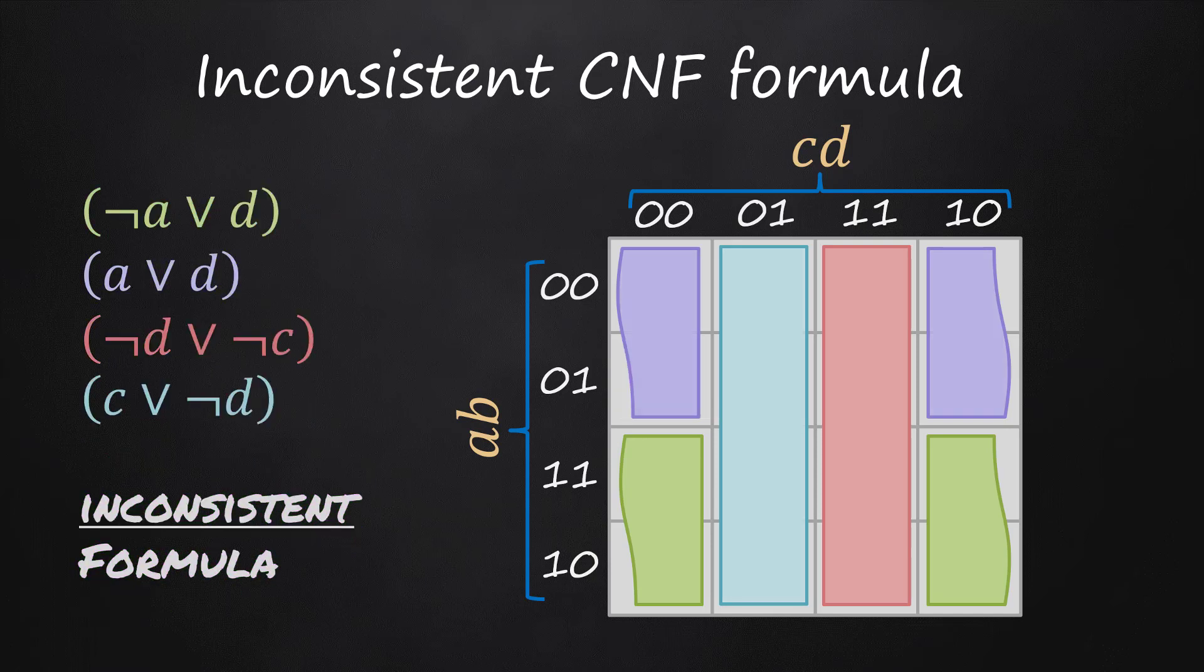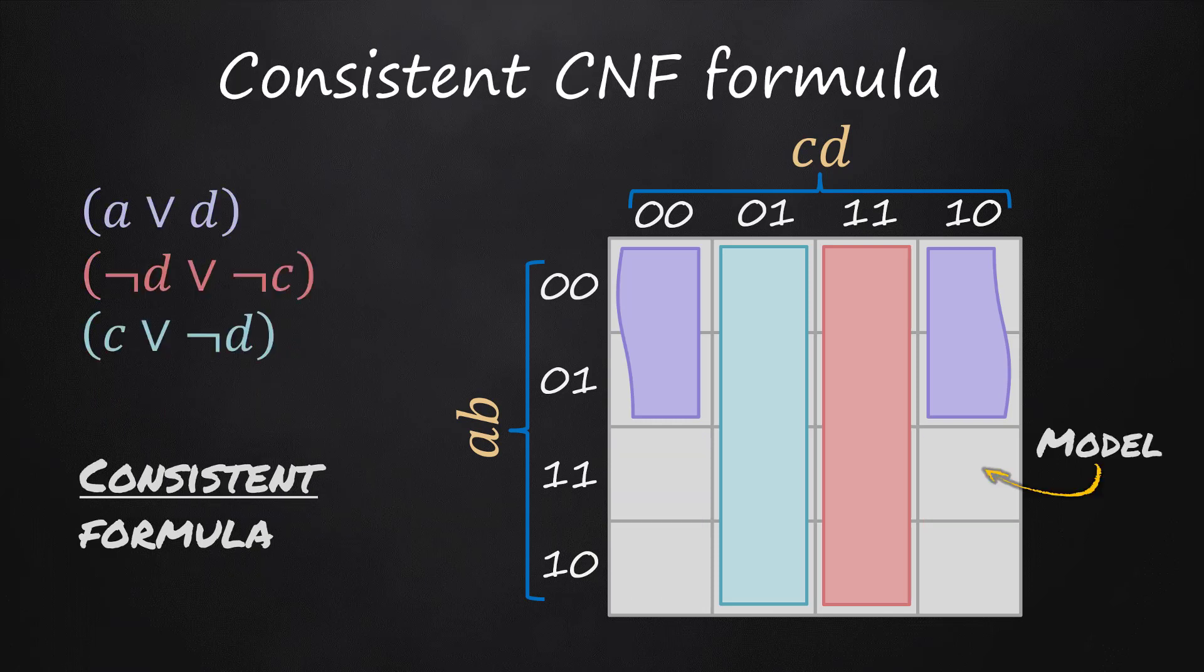If we remove the first clause, the formula remains inconsistent. But if the second clause is removed, some interpretations are no longer covered. These are models of the formula. The formula is then said to be consistent.